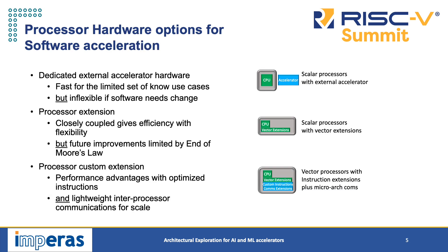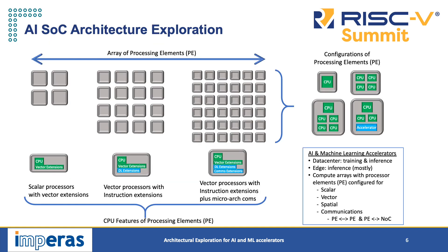There are many different types of hardware: you can have external accelerators where you add an accelerator to your CPU with a simple scalar processor. You can add vector extensions, or you can add vector extensions and custom instructions and custom extensions to get the performance that you need. When you have your cores you need to put them together in certain configurations, which can range from relatively simple to complex and very heterogeneous arrays of processors with a lot of communication between them.